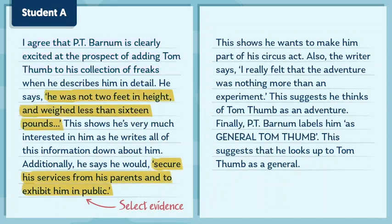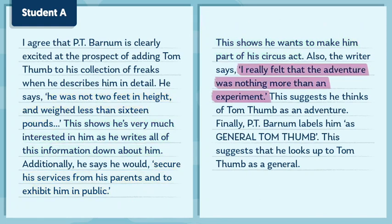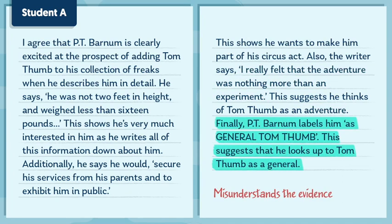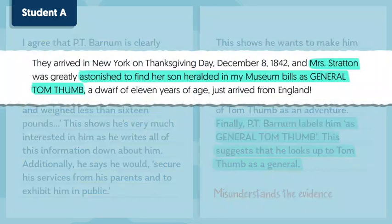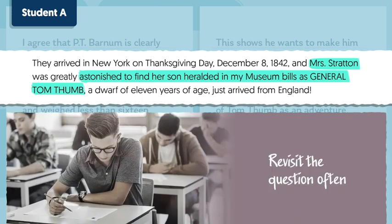The first two points are accurate as they select evidence and explain why their evidence proves Barnum's excitement. But it's from the third point onwards where they fail to earn themselves any more marks. For instance, they comment on the evidence 'I really felt that the adventure was nothing more than an experiment,' and repeat that Tom Thumb is an adventure, but don't take this further or explain anything in their own words. In their final point, they misunderstand the evidence, arguing that Barnum looks up to Thumb as a general — this isn't what the text says. Ideally, this isn't great evidence to use as it doesn't really answer the question, which is about P.T. Barnum's excitement about the prospect of Tom Thumb joining his circus. It's important to revisit the question regularly to make sure the points you're making are focused and relevant.